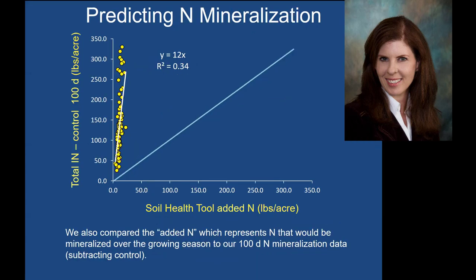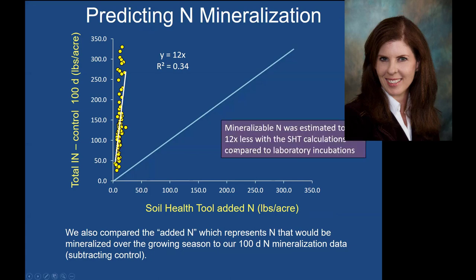We then looked at the 'added N' factor in the soil health tool, which is supposed to represent the amount of nitrogen that would be mineralized over the growing season. We compared that to our mineralizable nitrogen from a 100-day incubation period, which gives us an idea of how much nitrogen we would expect to be released over the growing season. What we found was that the mineralizable nitrogen was estimated to be about 12 times less using the soil health tool calculations compared to what we saw with our typical laboratory incubations.